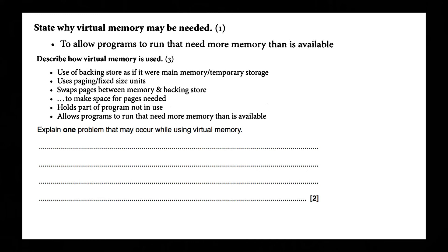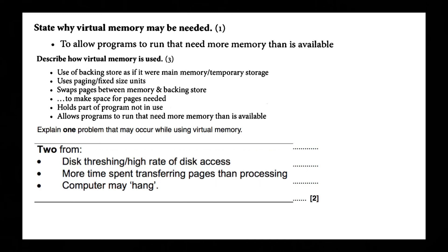Explain one problem that occurs while using virtual memory — any two of the following: disk thrashing; high rate of disk access; more time spent transferring pages than processing; the computer may hang. I would stick with the two main ones: disk thrashing and more time spent transferring pages than processing.